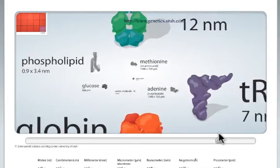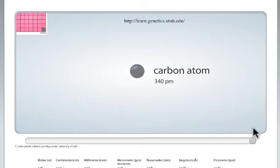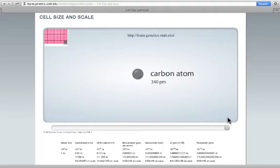And we start getting really small. All the way down to the carbon atom, which is about 340 picometers across. That's a trillionth of a meter. One picometer. That's kind of cool. But I digress.